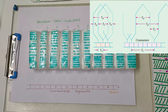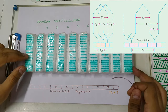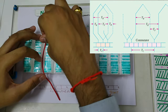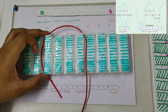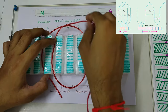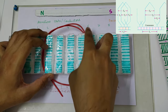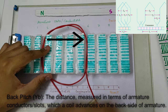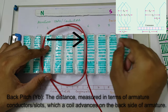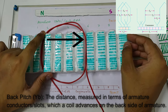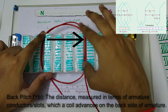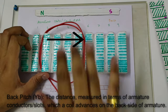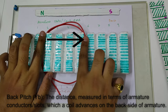Now let us learn the different pitches of the winding. You can see an image on your screen — this is the diagrammatic representation of the pitches. First, we will start with back pitch. Suppose we have a lap winding — then the lap winding would be going around like this. Back pitch is defined as the distance the coil advances on the back side of the armature, in terms of armature slots. Or we can call it the distance between the start of the coil and the end of the same coil on the back side. In this case, it is starting from this slot — 1, 2, 3, and 4. So 4 is the back pitch.